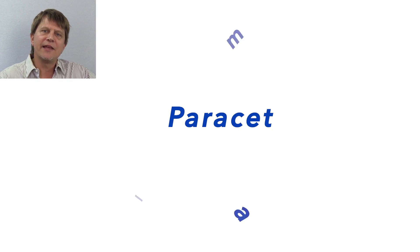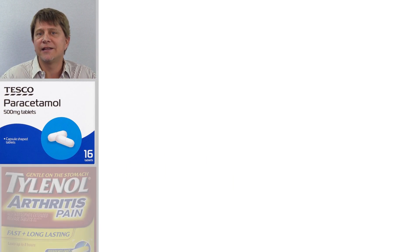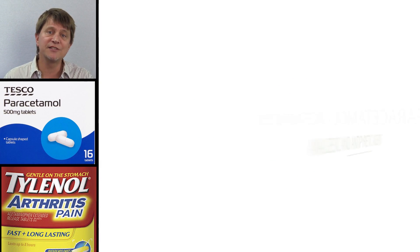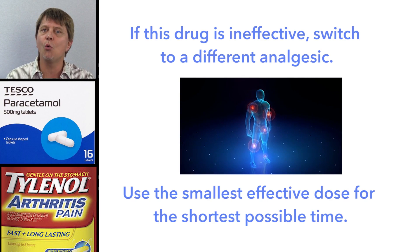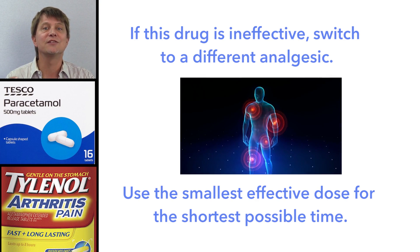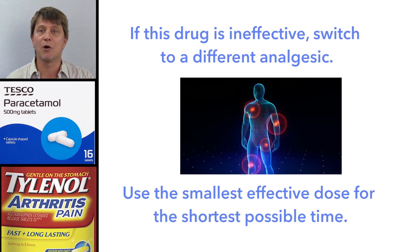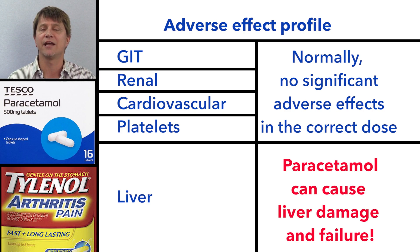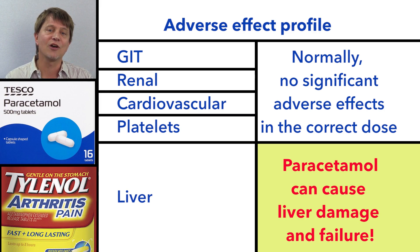In summary, paracetamol, also known as acetaminophen in the United States, is used to treat pain and fever. It is effective for mild to moderate pain, but no analgesic is effective in all people or for all conditions, so the smallest dose for the shortest period of time is most appropriate. While paracetamol does not harm the gastrointestinal tract or kidneys to the same degree as NSAIDs, and does not affect platelet aggregation in the same way, it is toxic to the liver and can cause serious liver damage if more than the recommended dose is used.